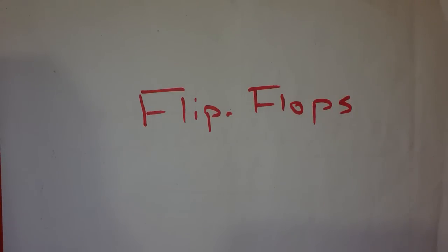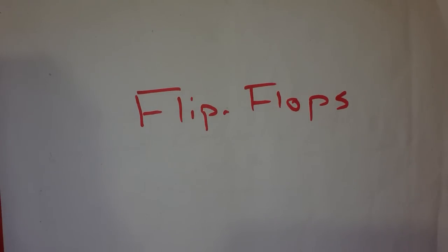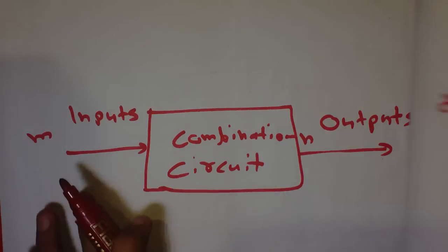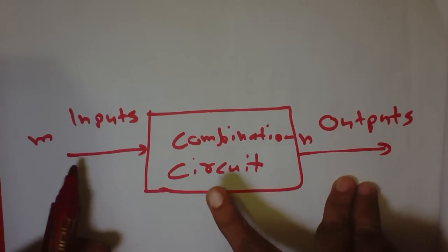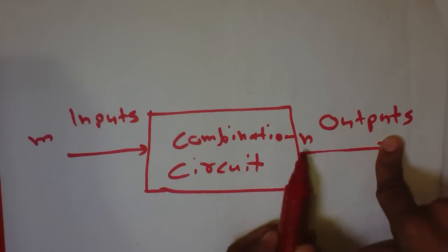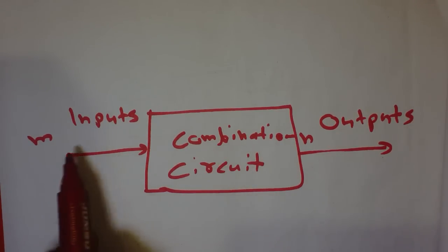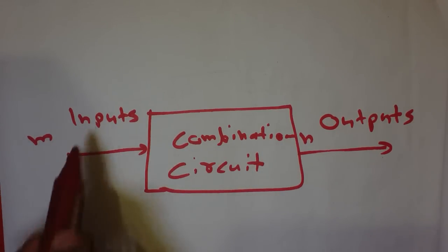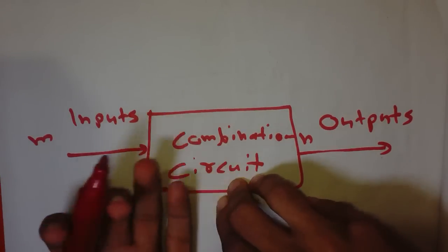Hello people, welcome to this tutorial. In this tutorial we will see an introduction to flip-flops. First, let's clarify some basics. This is the diagram of a combinational circuit. A combinational circuit has several inputs and several outputs — m number of inputs — and no memory element. The inputs like A, B, C, D take values 0 or 1, and the output is calculated from those inputs.